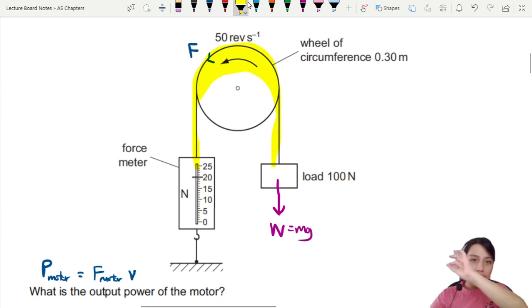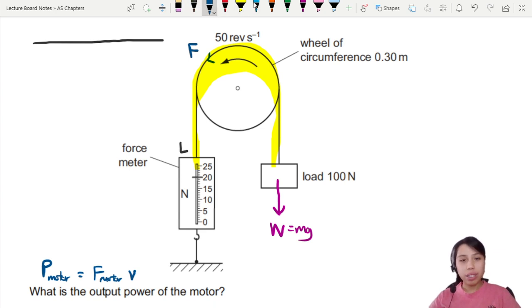If I take this rope and straighten it out into a straight line, on the left side, the newton meter is pulling the string. The newton meter has a spring inside, so this is the force of the meter.